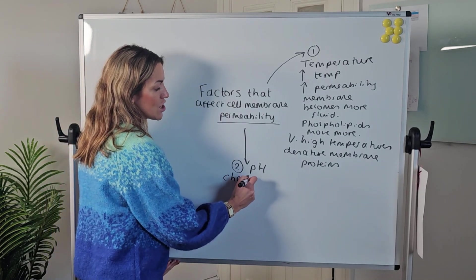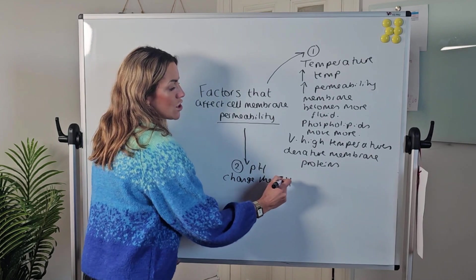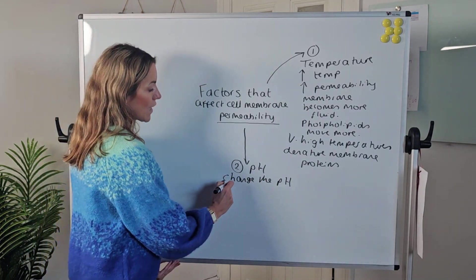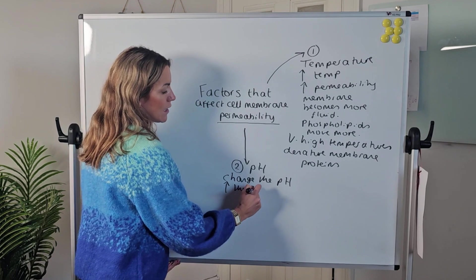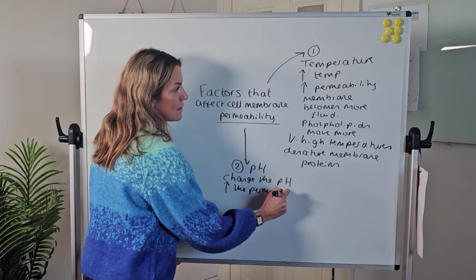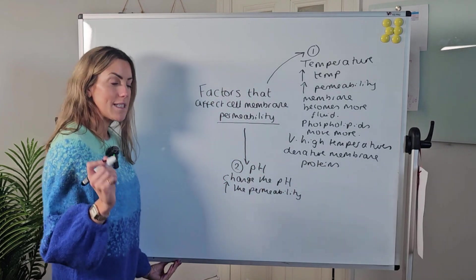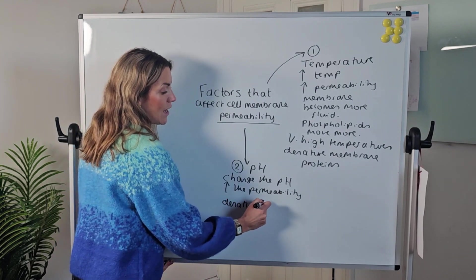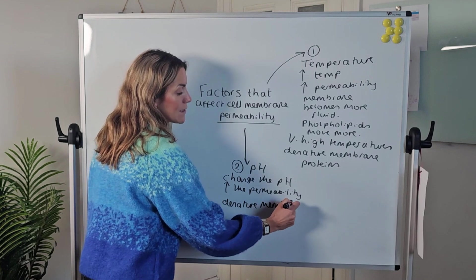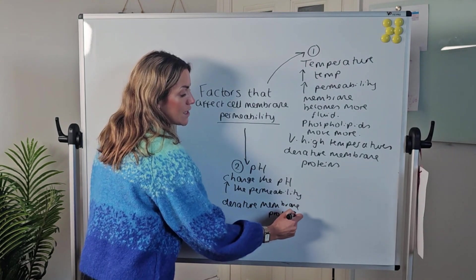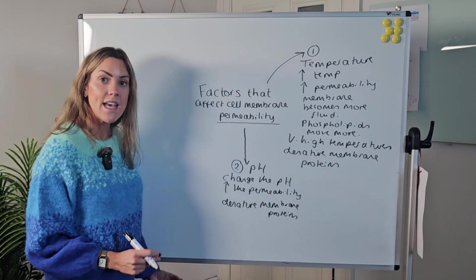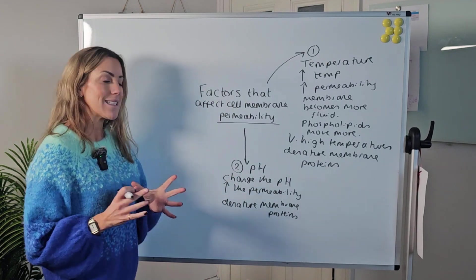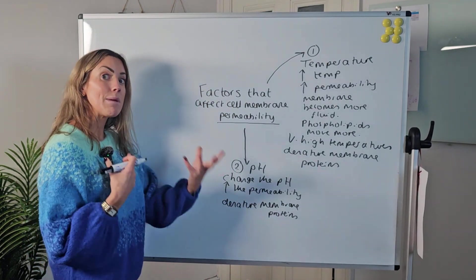If we change the pH so it's away from optimum or further away from neutral, we're going to increase the permeability of the cell surface membrane. This is because changing the pH is going to denature membrane proteins, which we've also discussed in relation to temperature. If we denature the channel, the carrier, or any of the proteins embedded in that cell surface membrane, the membrane is going to become more permeable.